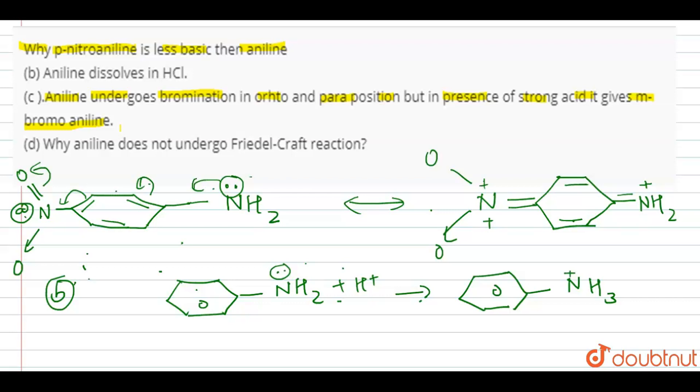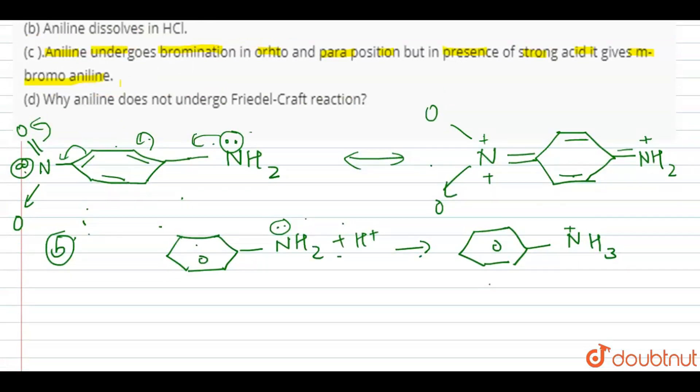The presence of NH3+ makes this product meta directing, deactivating the ring for the ortho and para positions. So the meta-bromo product is formed in the presence of strong acid.